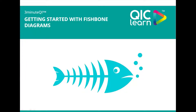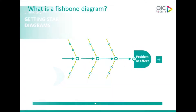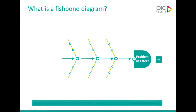Hi and welcome to our three minute QI on fishbone diagrams. This is a visual tool which helps us to organize our thinking by categorizing the many potential causes of the problem. The diagram has a central spine and several offshooting branches or bones, hence the likeness to a fishbone.